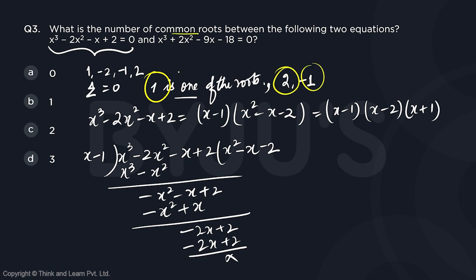If you are going to have common roots, that means putting 1, 2, and -1 in the second equation, the second LHS should also give us 0. So if I put 1 here, I will be having 1³ + 2(1²) - 9(1) - 18, which will not be equal to 0. So 1 is definitely not a common root.